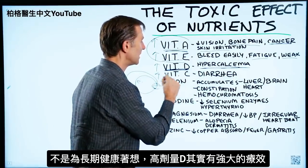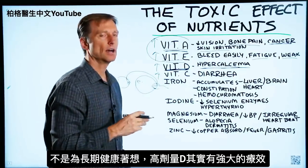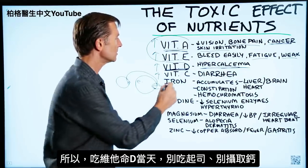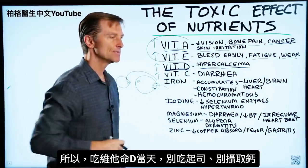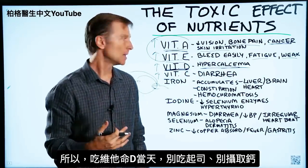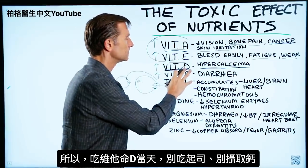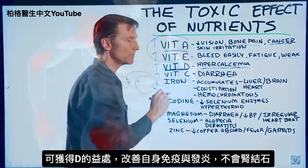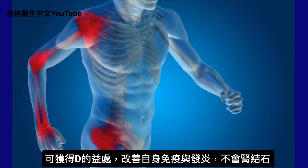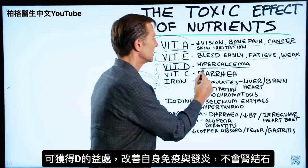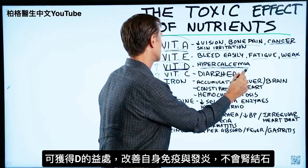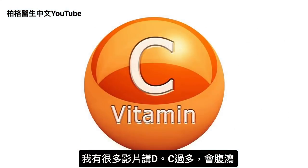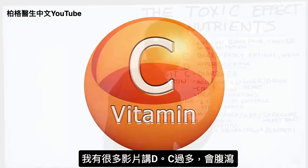The therapeutic benefit of high levels of vitamin D is huge. One strategy is to avoid taking cheese or calcium when you take vitamin D, or even during the day — that way you get the benefit of vitamin D, especially for autoimmune conditions and inflammation, without the risk of getting a kidney stone. As for vitamin C, the main side effect is diarrhea.